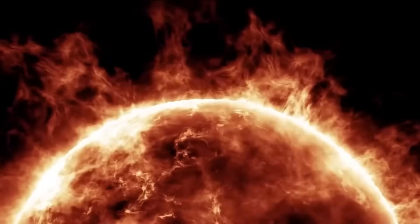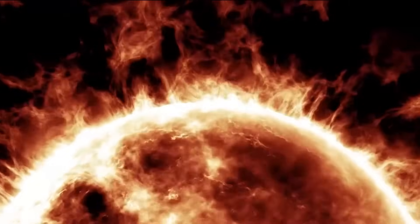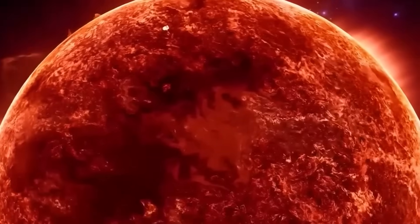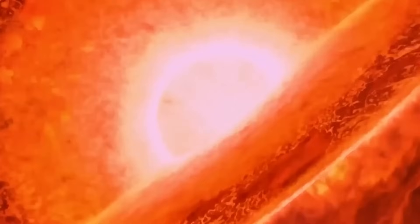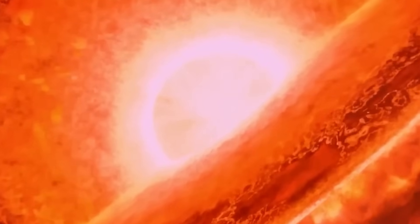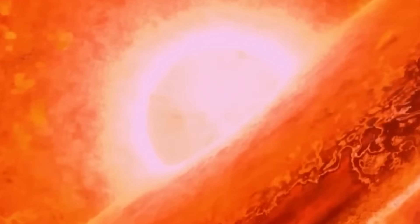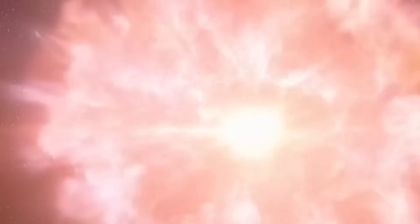Betelgeuse, this colossal star in the twilight of its existence is so huge that if we swapped it with the sun at the heart of our solar system, it would stretch out to where Jupiter orbits. Picture that, it's like having a giant star neighbor hogging the space. But the real show is yet to come. Betelgeuse is heading towards a grand finale, a colossal supernova explosion. Imagine the star going out with a bang, possibly giving birth to a neutron star or even a mysterious black hole.